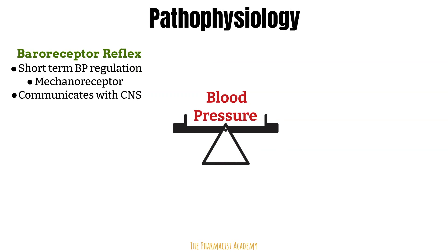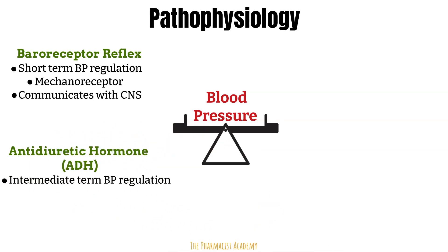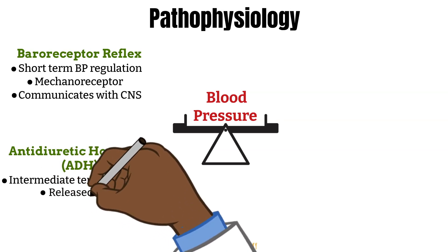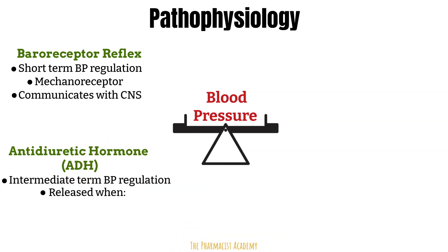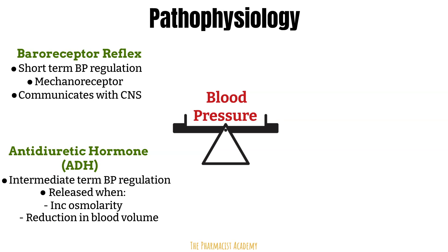The next thing that helps regulate blood pressure is antidiuretic hormone, also known as vasopressin. It's responsible for intermediate blood pressure regulation, meaning it doesn't fix blood pressure instantly like the baroreceptor reflex — instead, it takes time. It is synthesized and released by the hypothalamus due to certain triggers, such as an increase in osmolarity and a reduction in blood volume. When someone is dehydrated, the osmolarity of the blood will increase. Antidiuretic hormone will then be released to increase water reabsorption in the kidneys, resulting in an increase in intravascular volume and cardiac output.